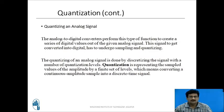The analog-to-digital converter performs this function to create a series of digital values out of a given analog signal. This signal must undergo sampling and quantizing to be converted into digital. The quantizing of an analog signal is done by discretizing the signal with a minimum number of quantization levels. Quantization represents the sampled values of the amplitude by a final set of levels, converting a continuous amplitude sample into a discrete time signal.